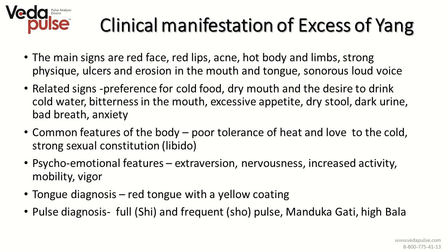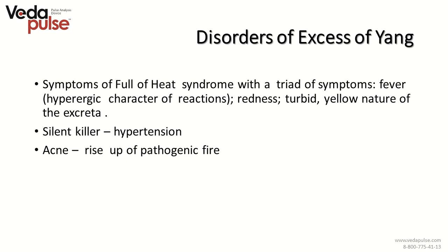Common features of the body include poor tolerance of heat, love of cold, and strong sexual constitution or libido. Psycho-emotional features include extraversion, nervousness, increased activity, mobility, and vigor. Tongue diagnosis shows the tongue has a red color with a yellow coating. Pulse diagnosis shows a full and frequent pulse with high bala. Disorders of excess of Yang include symptoms of full heat syndrome — a triad of fever, redness, and turbid yellow nature of excreta.